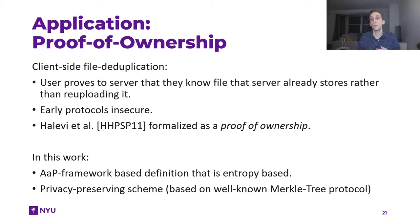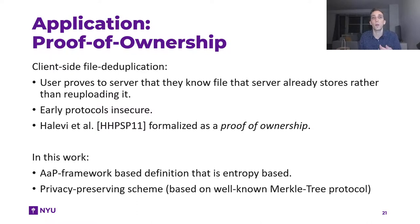This Merkle-tree protocol — the standard version of it — is not zero-knowledge. We then make it almost zero-knowledge, but with some explicit leakage. In particular, the leakage that a dishonest prover might get is essentially whether the server already has this file stored or not. We believe that in the context of client-side file deduplication, this is not really an issue, because this seems to be something a user inherently has to learn if you want efficient protocols: if the server already stores the file we can skip uploading it, but if the server does not know the file yet, then the user obviously has to upload it.